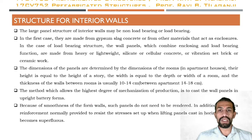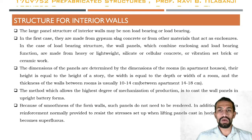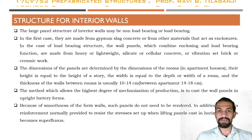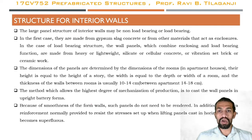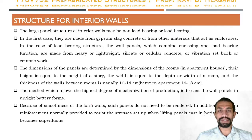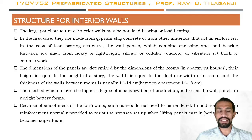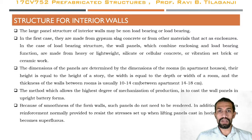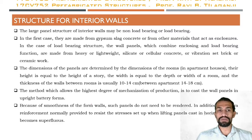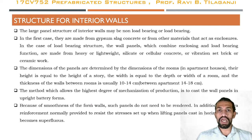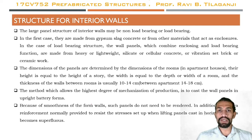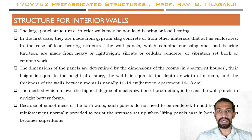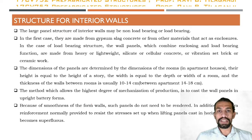Interior walls in a large panel structure may be non-load bearing or load bearing. In the non-load bearing case, they are made from gypsum, slag concrete, or other materials acting as enclosures. In the load bearing case, wall panels combining enclosing and load bearing functions are made from heavy or lightweight silicate, cellular concrete, or vibration-set brick or ceramic work.